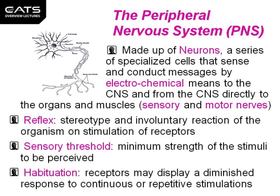A reflex is a stereotypical, that is recognisable and very similar in appearance, involuntary reaction of the organism on stimulation of receptors. For example, just knocking under the knee makes the foot jerk upwards, or holding a hot plate you might want to drop it quickly if it's burning your fingers. This happens quickly through a reflex arc in the peripheral nervous system at the level of the spinal cord.